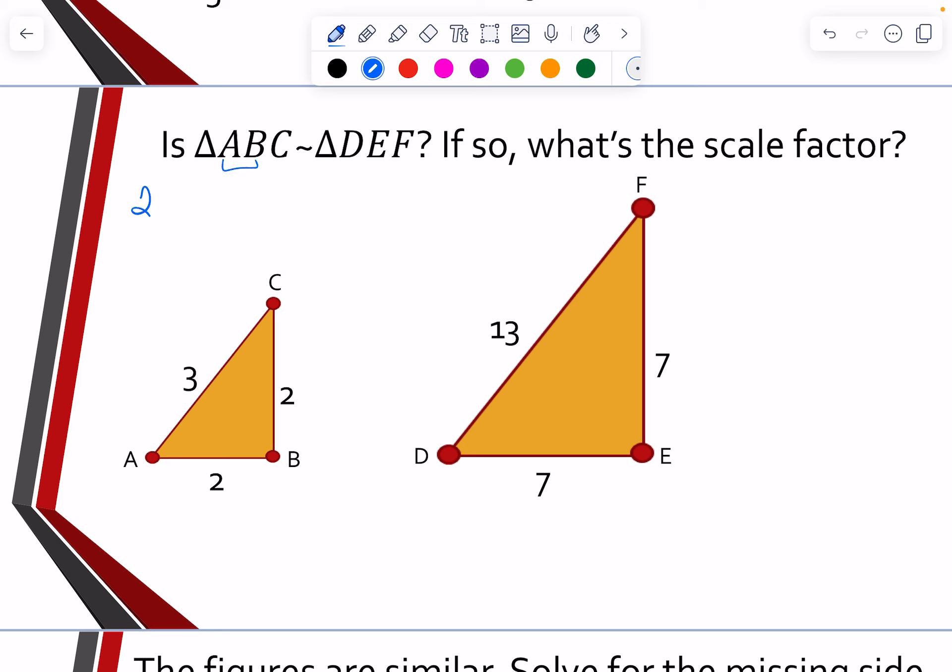AB goes to DE. So 2 to 7. So now we keep going. Well, what about BC? Well, BC is 2. EF, that's 7. So far, so good. Let's try the third one. 3 to 13. Are all of those equal?